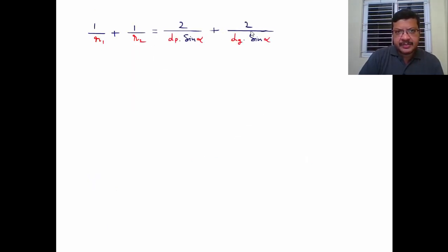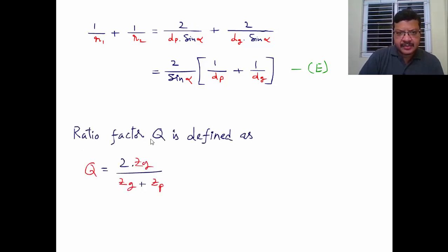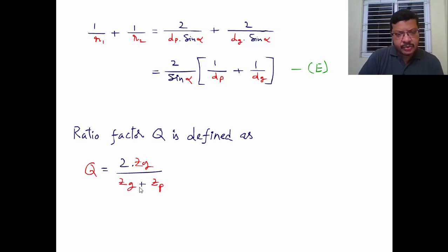Substituting those R1 and R2 values gives 1/R1 + 1/R2 = (2/sin α)·(1/dp + 1/dg). The ratio factor q is defined as q = 2·zg / (zg + zp), which you have studied in theory of machines. This is the equation of q for internal gears; for external gears it takes a slightly different form. For now, consider only external gears.